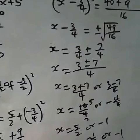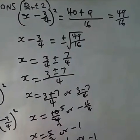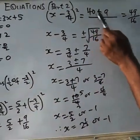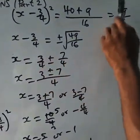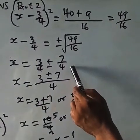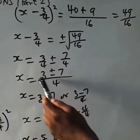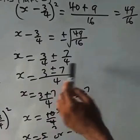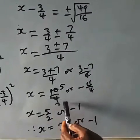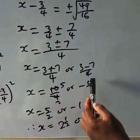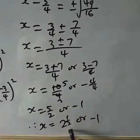So (x − 3/4)² equals 5 over 2 plus 9 over 16. The LCM of 2 and 16 is 16; 8 times 5 is 40, plus 9 is 49, over 16. Taking the square root of both sides: x minus 3 over 4 equals plus or minus the square root of 49 over 16, which is 7 over 4. Bringing minus 3 over 4 across gives plus 3 over 4, so x equals 3 plus 7 over 4 or 3 minus 7 over 4 — that is 10 over 4 or minus 4 over 4, simplifying to 2 and a half or minus 1.